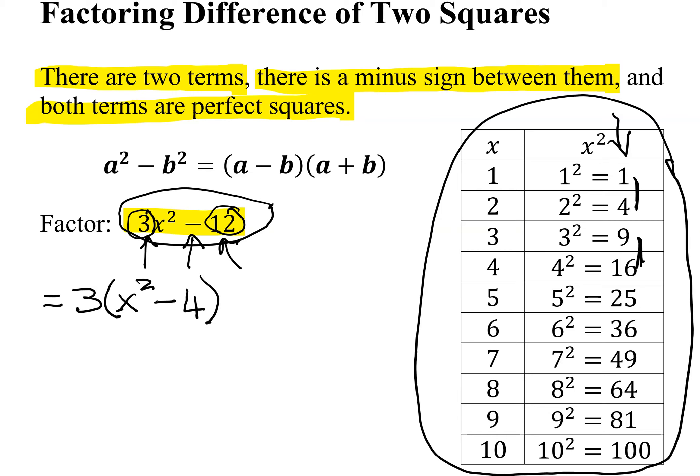So now I have 3 times x squared minus 4. So now let's look at our remaining expression here. Is x squared minus 4 the difference of two squares?